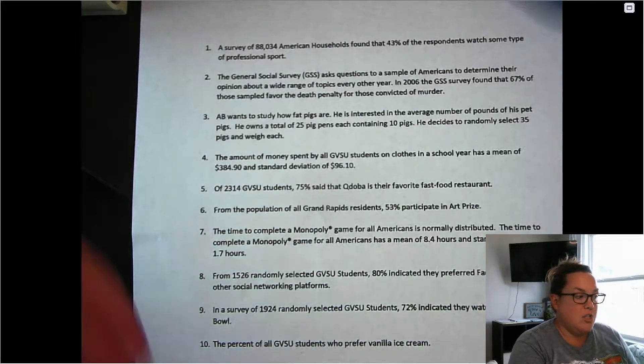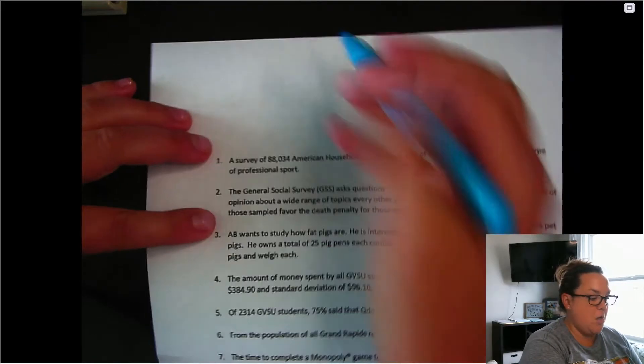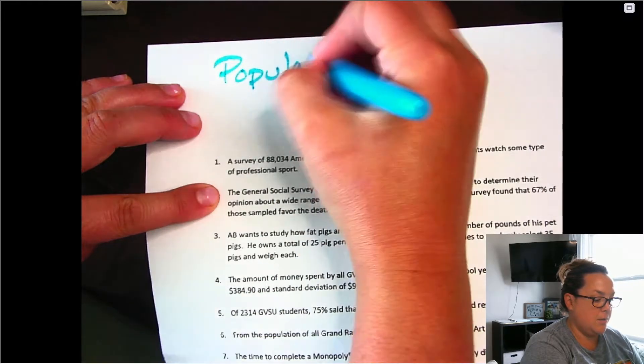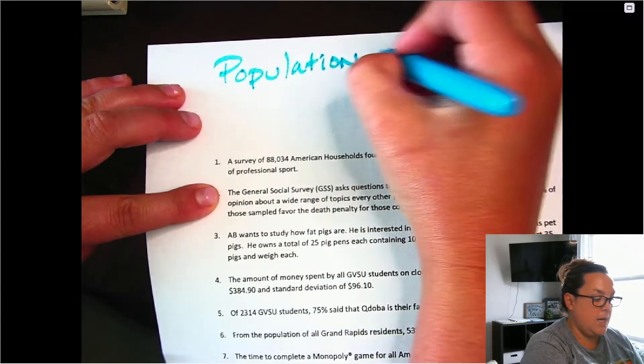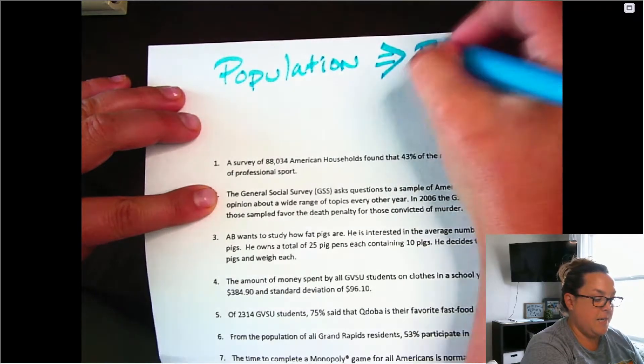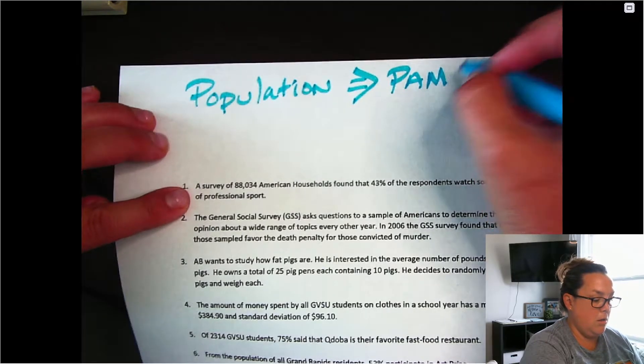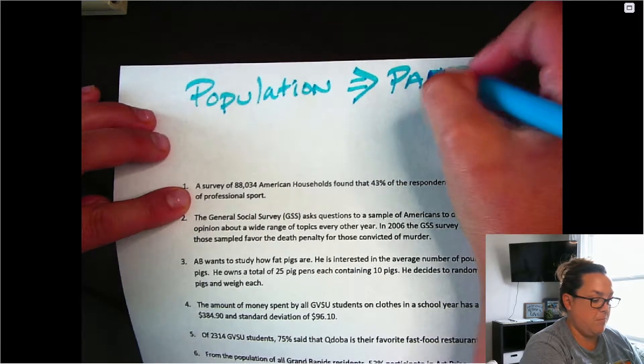So just as a quick reminder, when you talk about a population, it has numbers referring to it, which we call parameters.